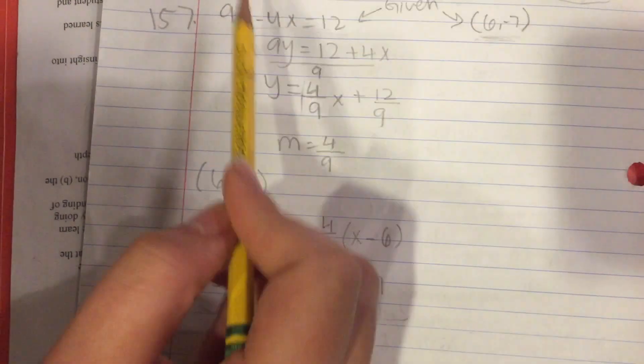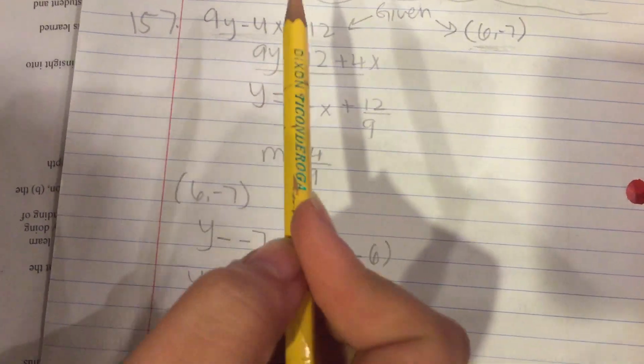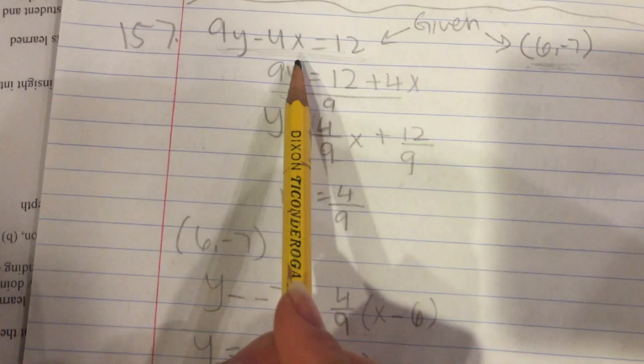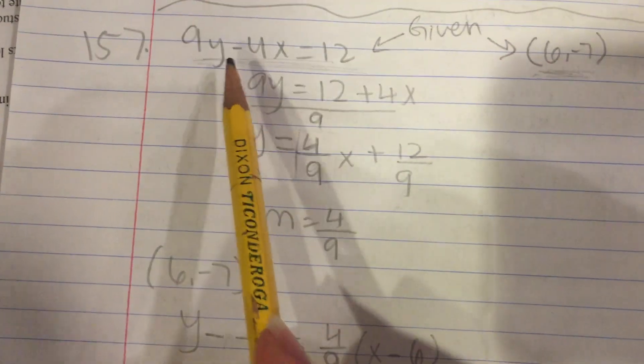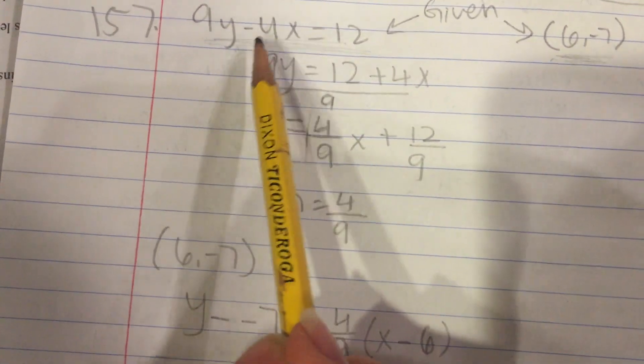that is parallel to this equation. We know that parallel lines have the same slope, so the first thing we have to do is find the slope of this line.